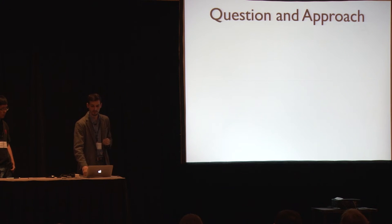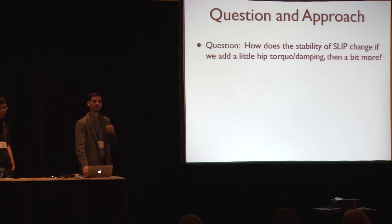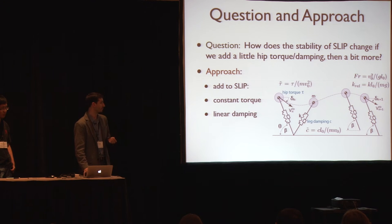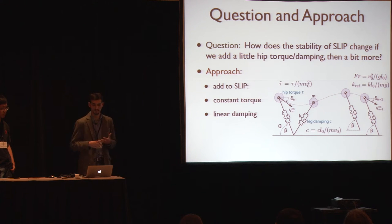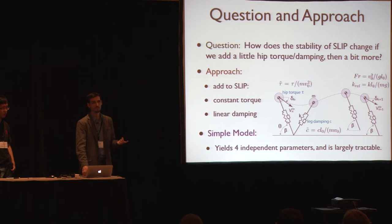The question and approach here is: how does the stability of SLIP change if we add a little hip torque damping, and how does it change if we add more — essentially a continuation study. The approach is to add to SLIP a constant torque and linear damping. The resulting model has five dimensionless parameters: dimensionless torque, dimensionless damping, K (stiffness), Froude number, and leg landing angle. One quick result is the model is actually simpler because the torque and damping must go together for a periodic solution, leaving only four independent parameters — just one more than SLIP.